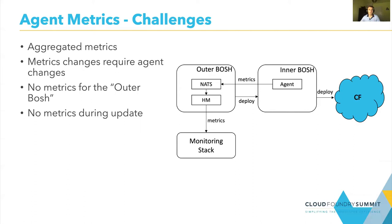But there are also many disadvantages with this setup. For example, the metrics are really simple ones. In a situation with an outage where you have high CPU usage on the director VM, based on the agent metrics, you can't answer the question of which process is causing the high CPU usage. Additionally, changes to the metrics are almost impossible because they require agent changes, and agent changes are high-effort tasks that bring risk with them. This setup also does not provide any metrics for the outer BOSH, and when the outer BOSH is updated, you don't have any metrics for the inner BOSH.